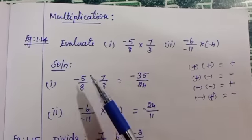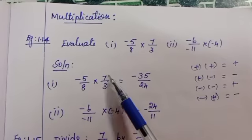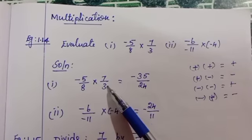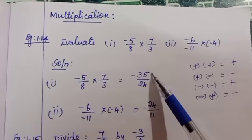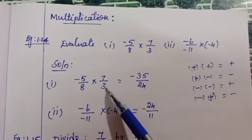So what is that rule? Just you have to multiply numerator value with numerator, denominator value with denominator. So that is 5 × 7 = 35, minus into plus is minus. 8 × 3 = 24.